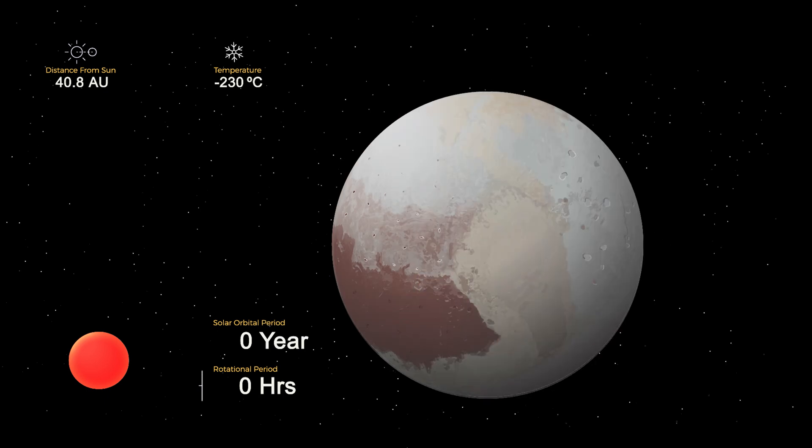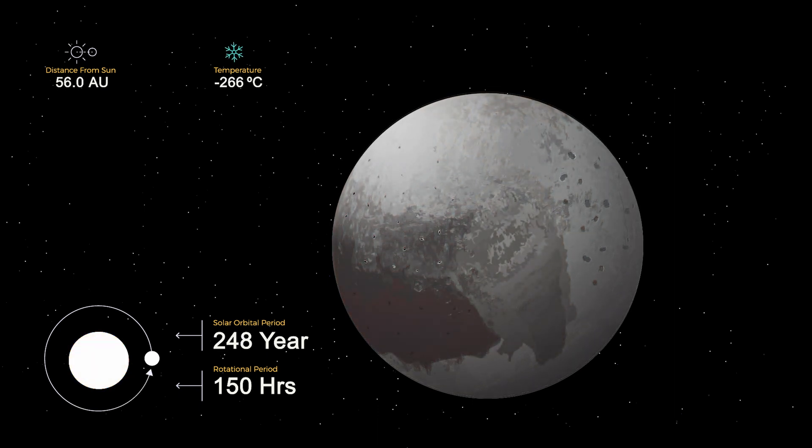Now Pluto and other dwarf planets will remain largely unaffected by the sun's red giant phase. However, as the sun dims and cools in its white dwarf phase, these objects will become dark and frozen realms, even more so than they are now.